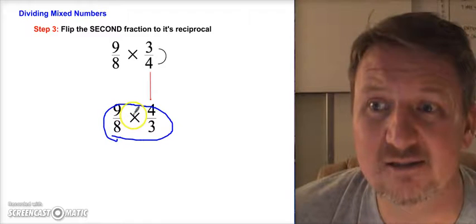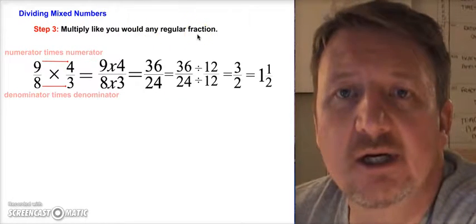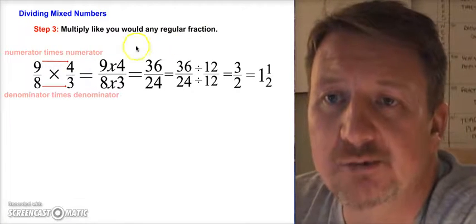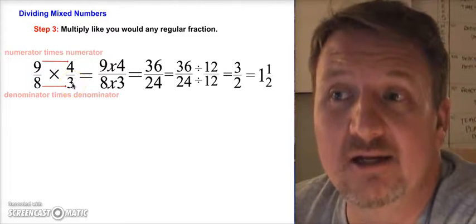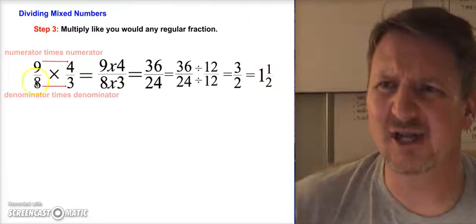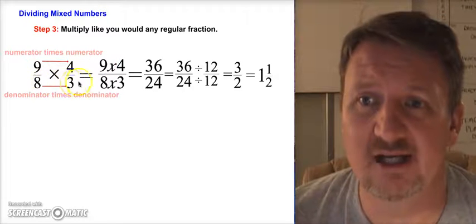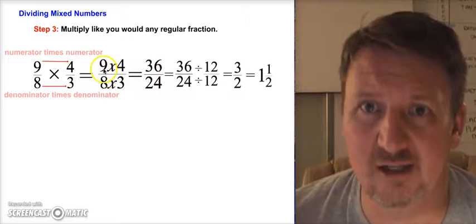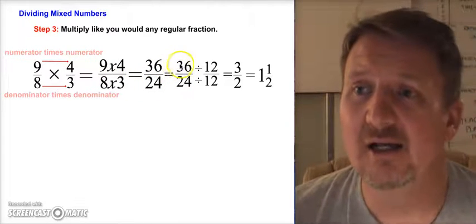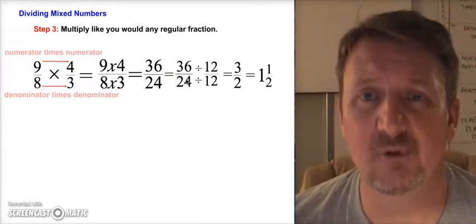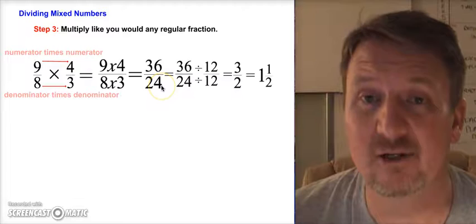Our new problem is nine-eighths times four-thirds. Now multiply just like any other fraction: multiply numerator times numerator and denominator times denominator. Nine times four gives us 36, and eight times three gives us 24, so we have 36 over 24. Now we need to simplify, which means finding the greatest common factor of 36 and 24.